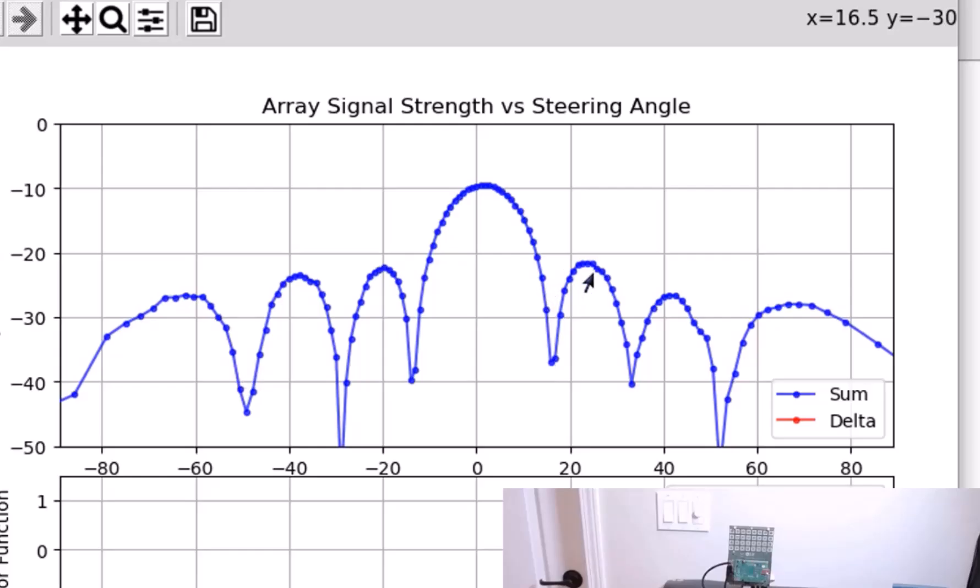We could also measure the amplitude of the first side lobe. This will be more interesting when we start to look at tapering. But remembering that our peak is at minus 9, and then this first side lobe here is at minus 21. So that's a 12 dB difference between the peak and the first side lobe. So we call it 12 dBc, 12 dB down from this peak carrier here.